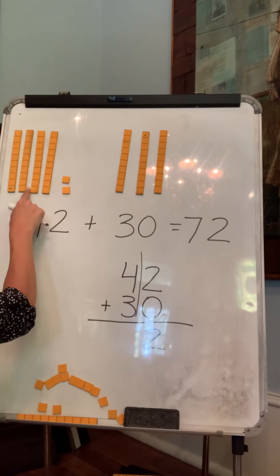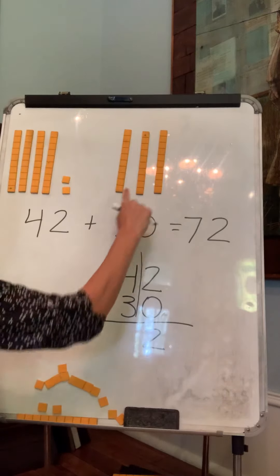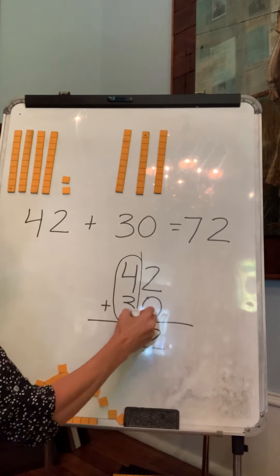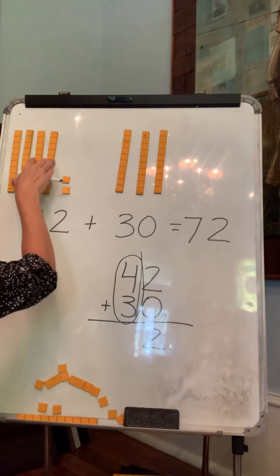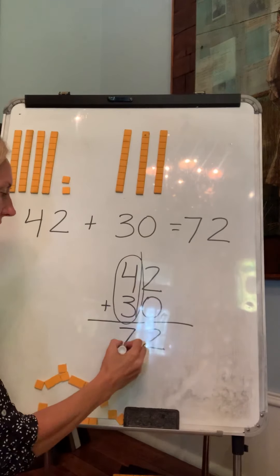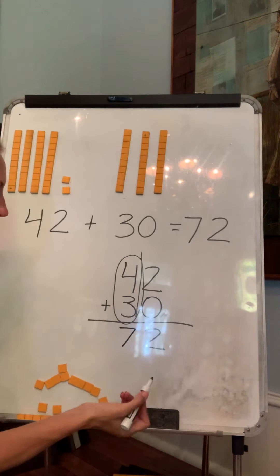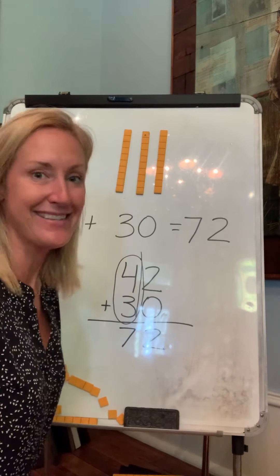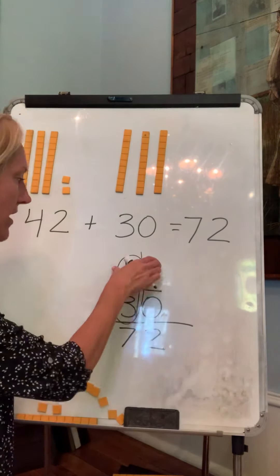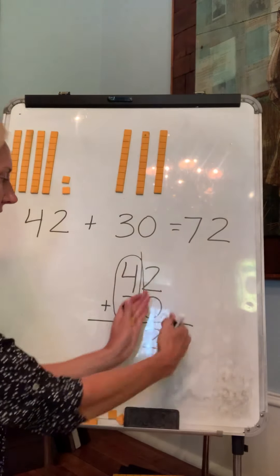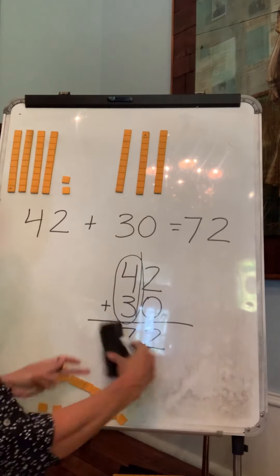Now let's do our tens. Four tens plus three tens. How many tens do we have all together? Seven. 72. Did we get the same answer? Yes. This is just another way to write it on top of each other with your ones together and your tens together. Okay.